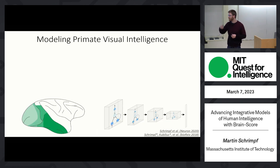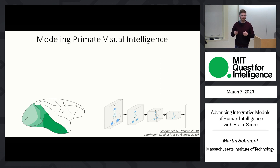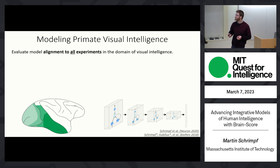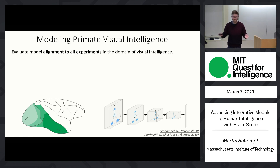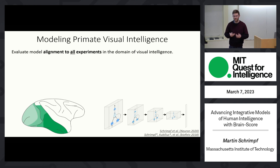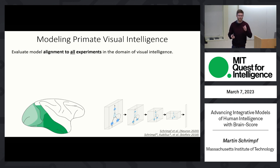If you think of modeling primate vision, the way we engage with that is to develop models and test them on all the tests in the field — basically all the experiments that anyone has ever done. Ideally we would test models in all of those. In practice we can't do everything, but we should at least not just do one, and do as many as we can.